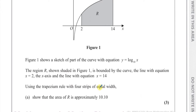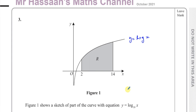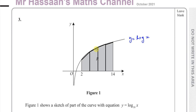Using the trapezium rule with 4 strips of equal width, show that the area of R is approximately 10.10. We need to split this area into 4 separate strips — 4 separate trapeziums — and then use those trapeziums to approximate the area under this curve between these limits. If we draw 3 lines in order to split this into 4 strips, we can see approximately trapezium shapes.